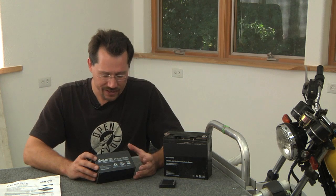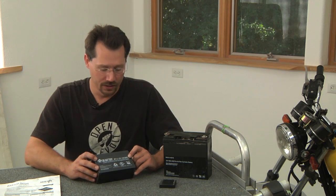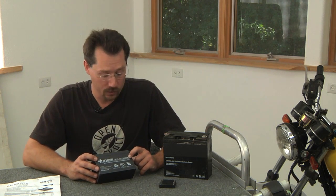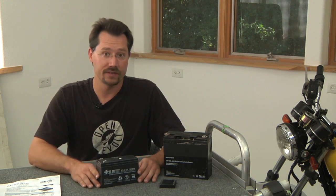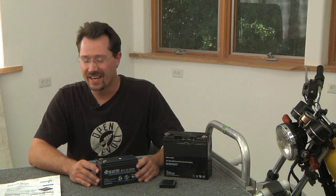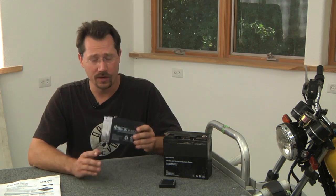For example, on here it says that it's rated for 7 amp hours but at the 20-hour rate, so if you were draining this slowly over a period of 20 hours you'd get those full 7 amps. But if you were draining this in only one hour, you're going to get less than that, so you might not even be able to run your motorcycle headlight for an hour on this battery.